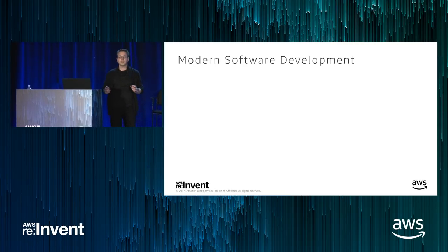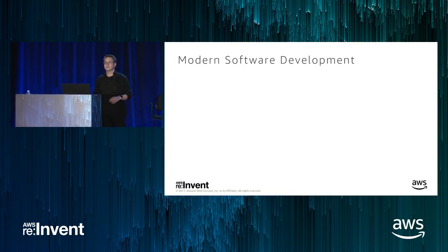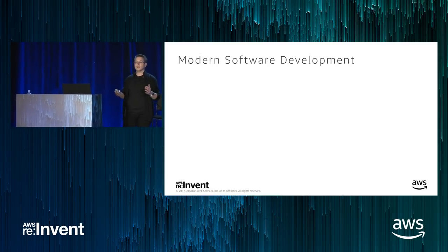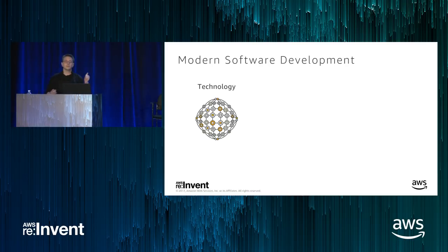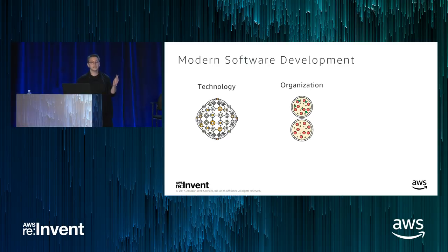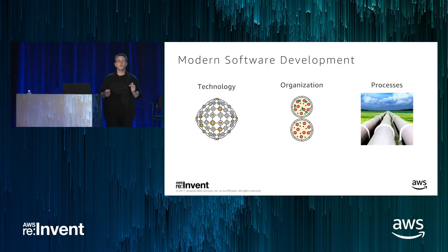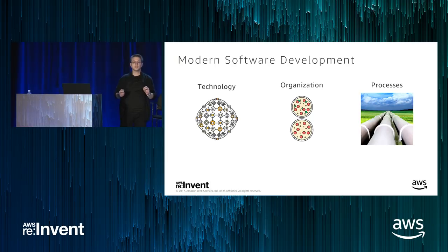Let's start by talking about modern software development. Some people think modern software development is all about technology. It's not just about technology — it's about three things: technology, organization, and processes. The way we look at modern software development at Amazon is from the technology perspective: we start with microservices.